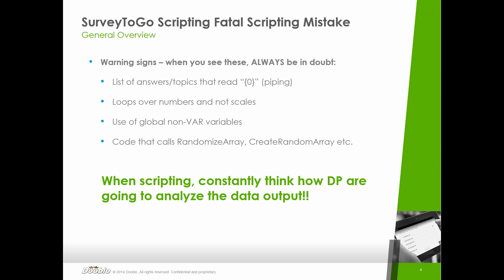Lastly, let's talk about warning signs — how do you know if there is potential for this catastrophic issue in your script? When you see the following, always be in doubt and check it. The first warning sign is if you see a list of answers or topics where all of the answers read curly braces — meaning someone is going to pipe something in there. If that something is randomized without saving the randomization output, that's when you get hit by this issue. Seeing curly braces doesn't always mean it's wrong, but if you see that list reading curly braces zero, watch out and investigate.